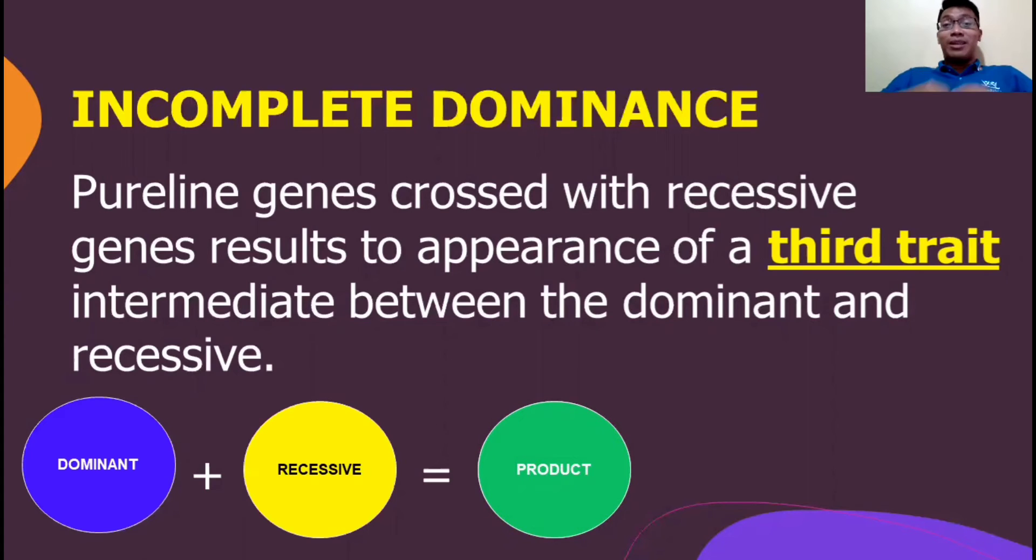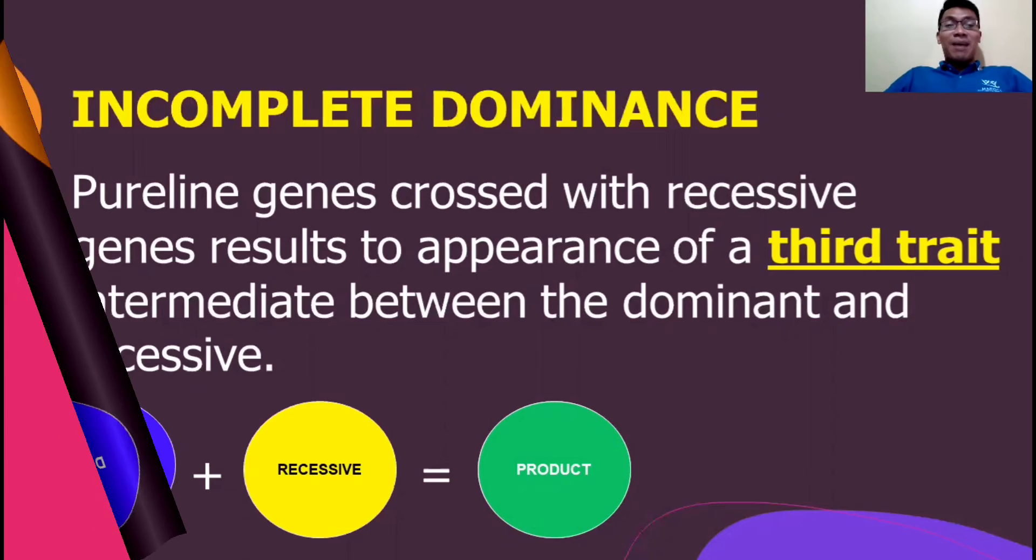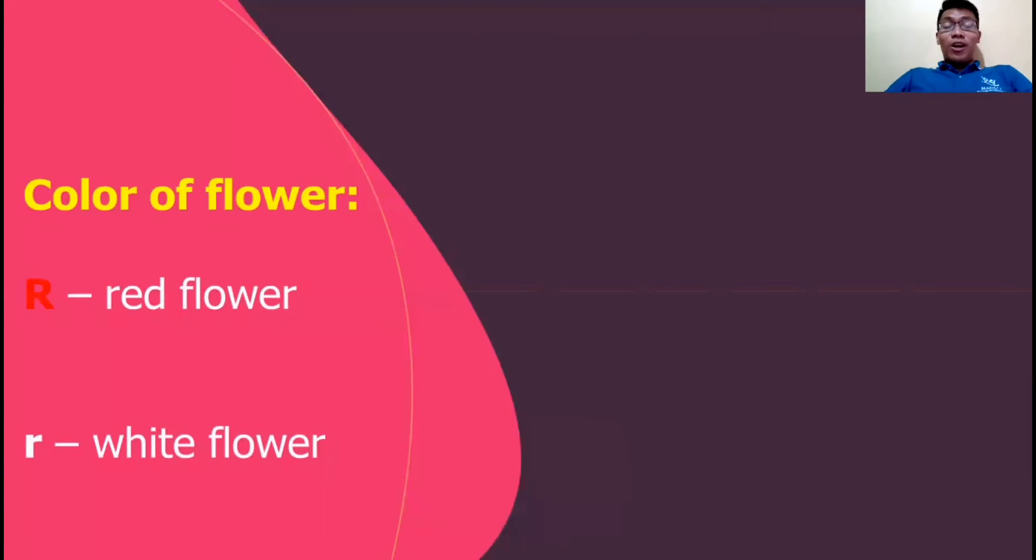However, in incomplete dominance, the result will be green. That is the third trait intermediate between the dominant and recessive trait.